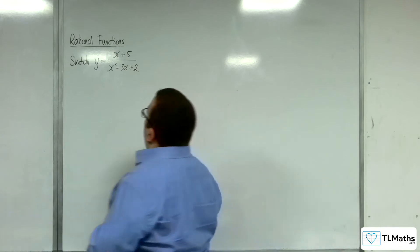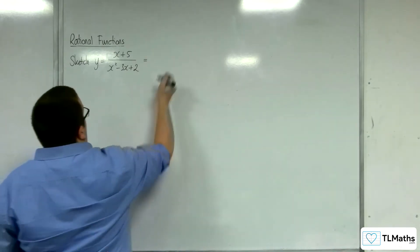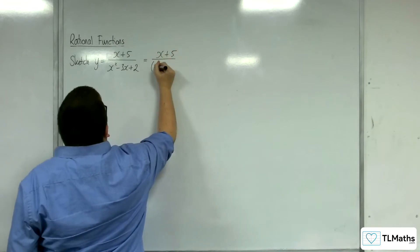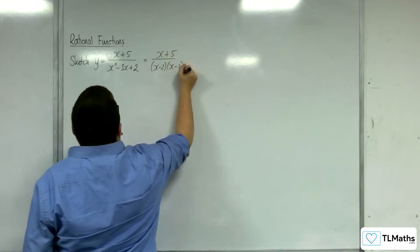Okay, so first thing to do, see if you can factorise, well in this case the denominator. x plus 5 can stay as it is, and so we're going to get x take away 2, x take away 1.